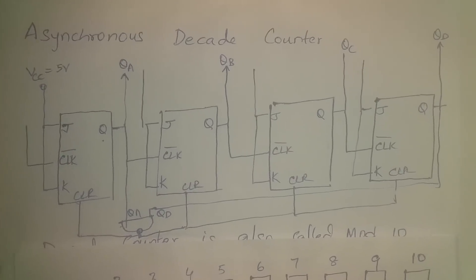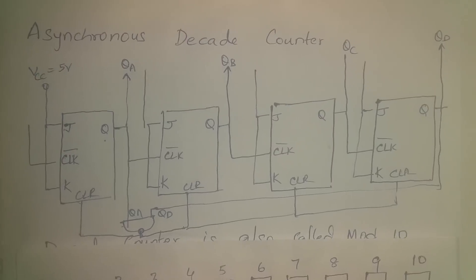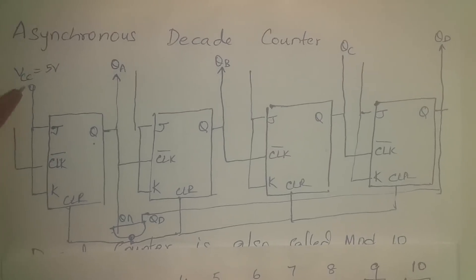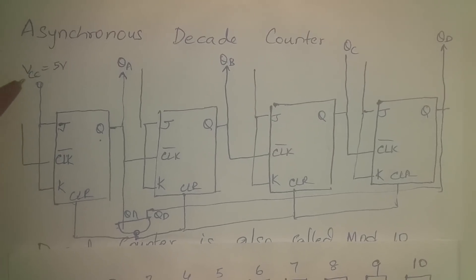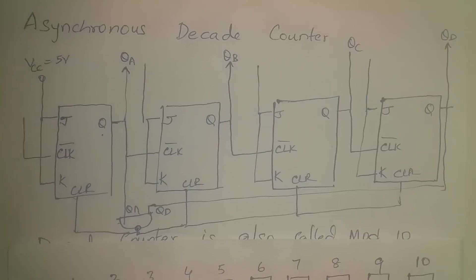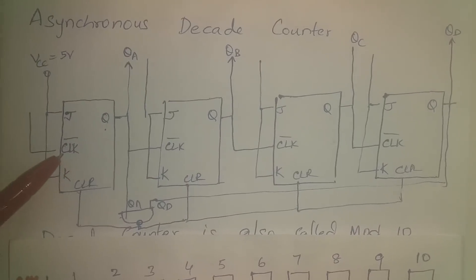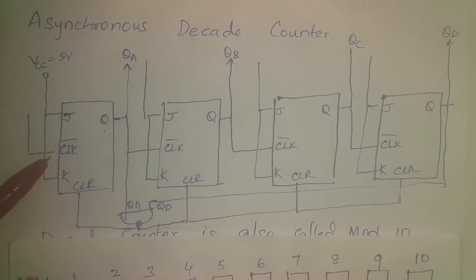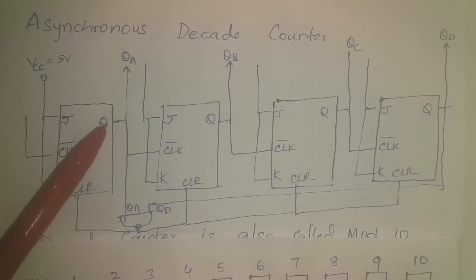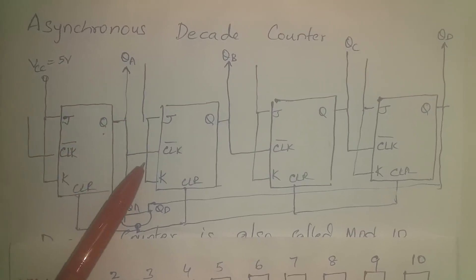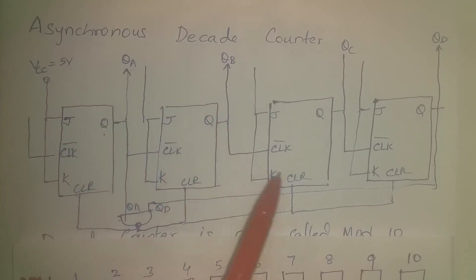The decade counter should count 10 pulses. Both J and K are tied to high. The clock is applied to the first flip-flop; output of the first flip-flop is the clock to the second flip-flop, and the output of the second flip-flop is the clock to the third flip-flop.